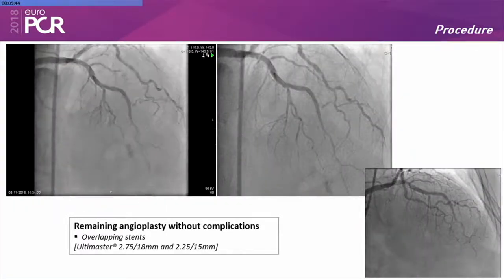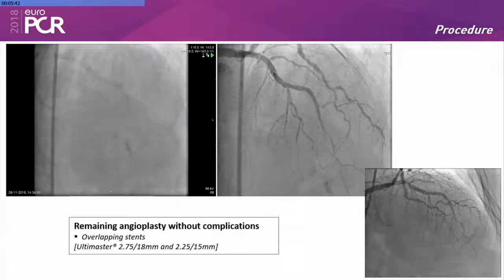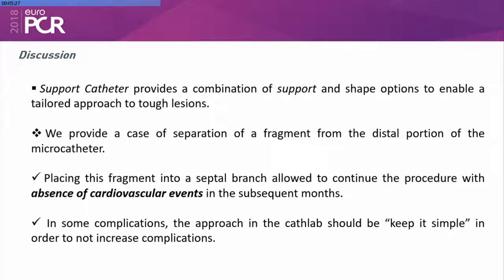The procedure was then continued without complications, with implantation of two overlapping stents, and with a good angiographic result. A support catheter provides a combination of support and shape options to enable a tailored approach to tough lesions. We presented a case of separation of a fragment from the distal portion of the microcatheter. Placing this fragment into a diagonal branch allowed continuation of the procedure with absence of cardiac events in the subsequent follow-up. In such complications, the approach in the cath lab should be keeping it simple in order not to increase complications.